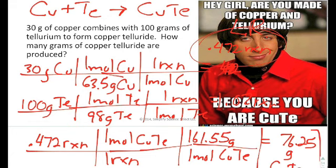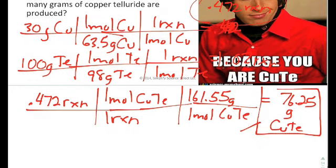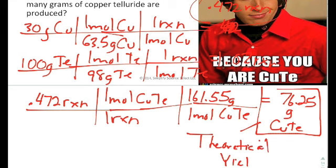Now this right here is what we call the theoretical yield. Now we will explore later in this year how we never actually reach the theoretical yield in an experimental situation. Instead, we actually get something called the actual yield, and we compare the actual yield and the theoretical yield in order to figure out the percent yield. But there's more on that later.